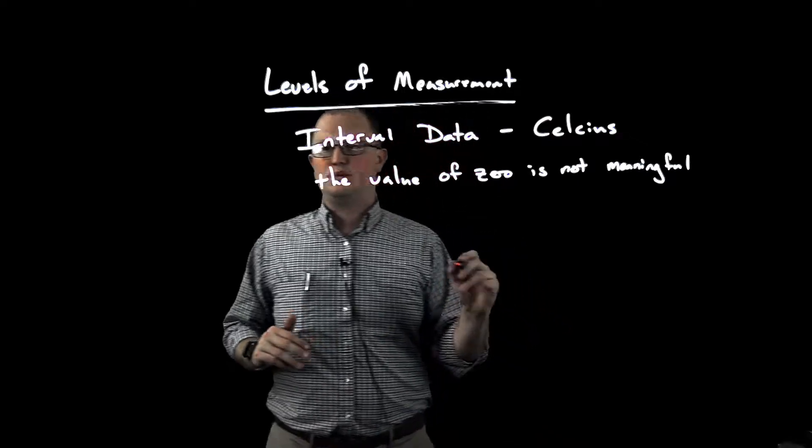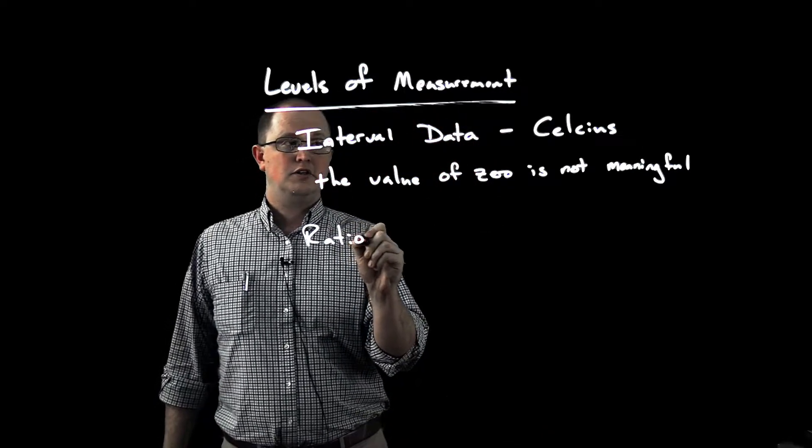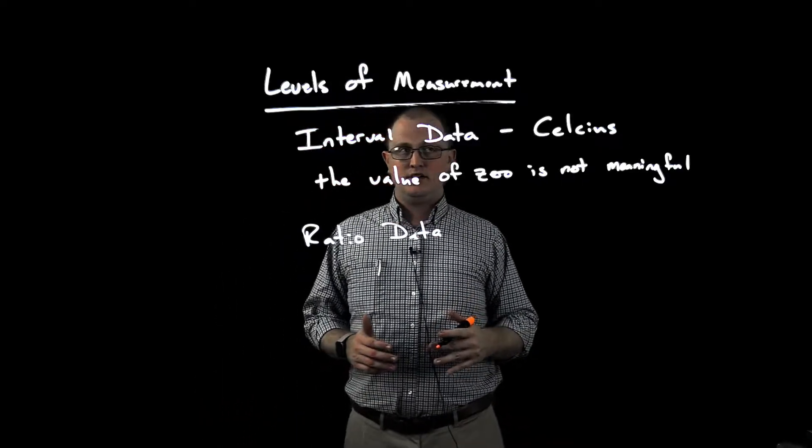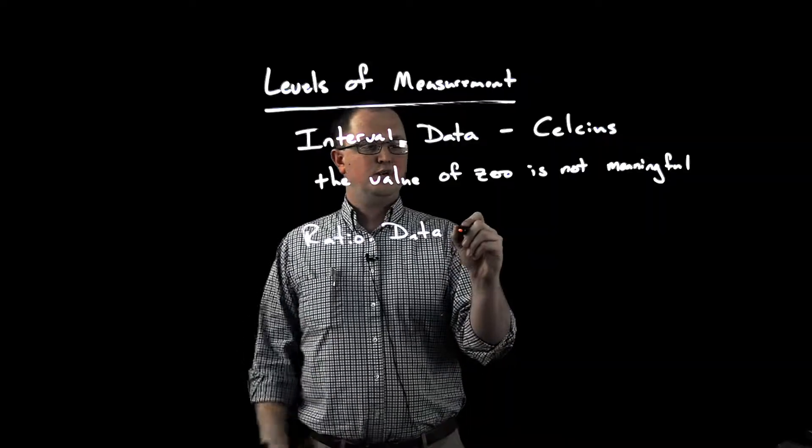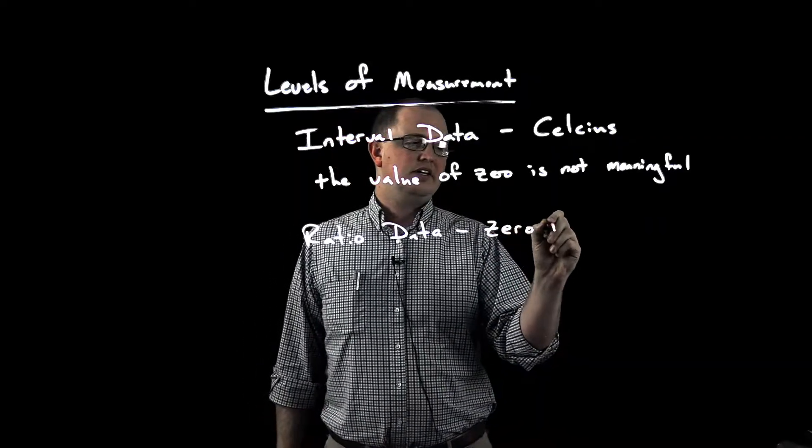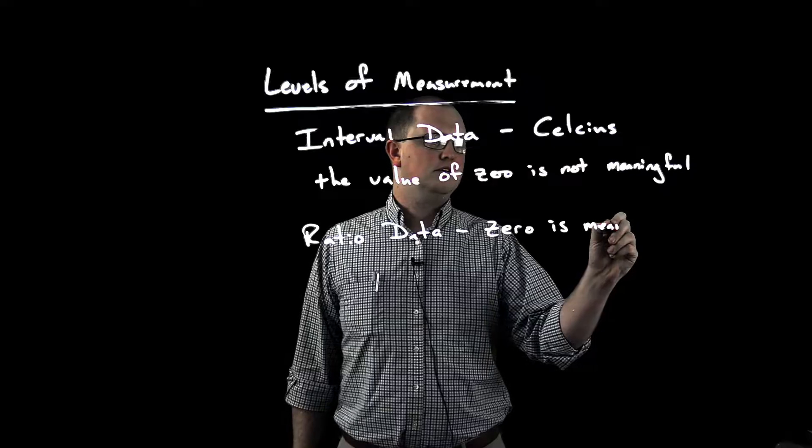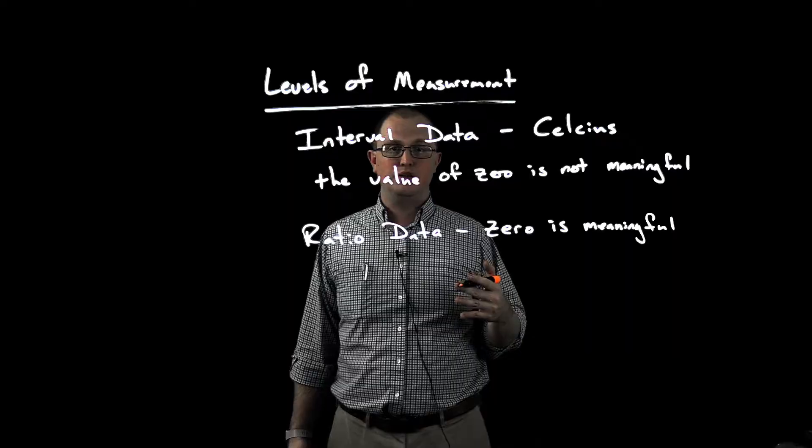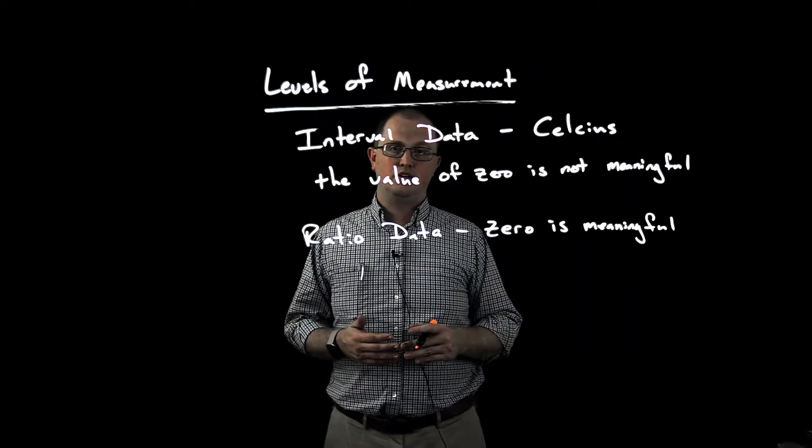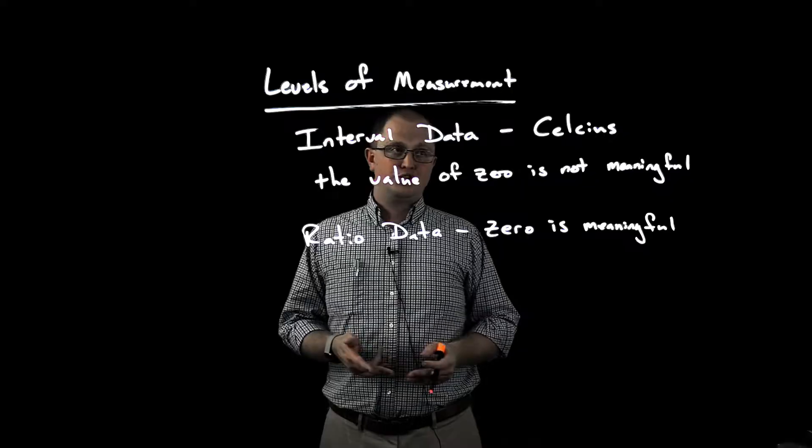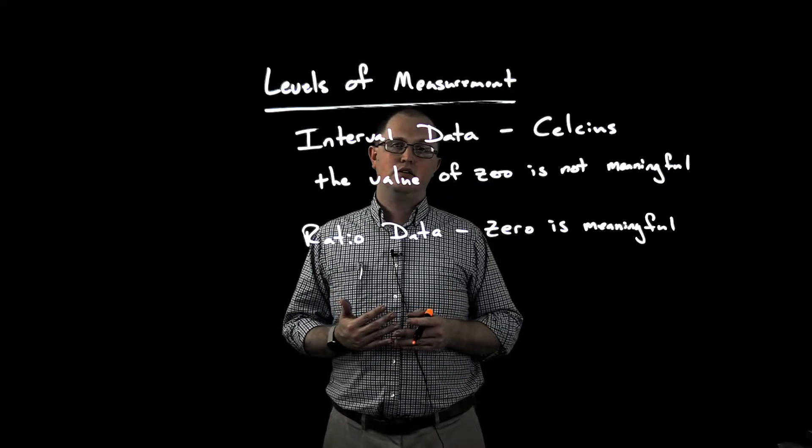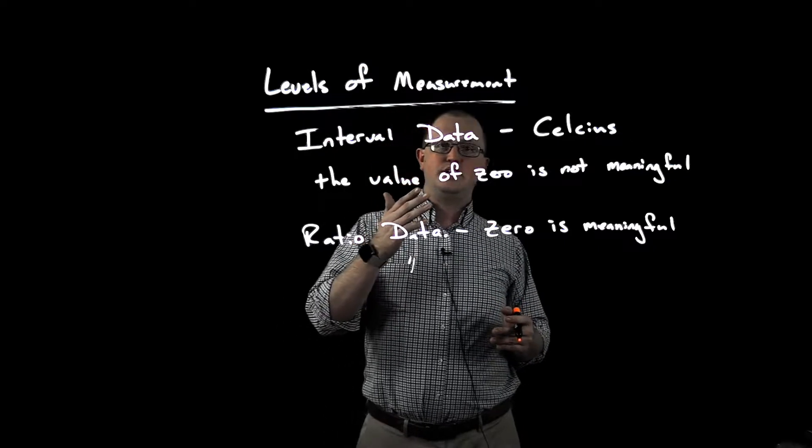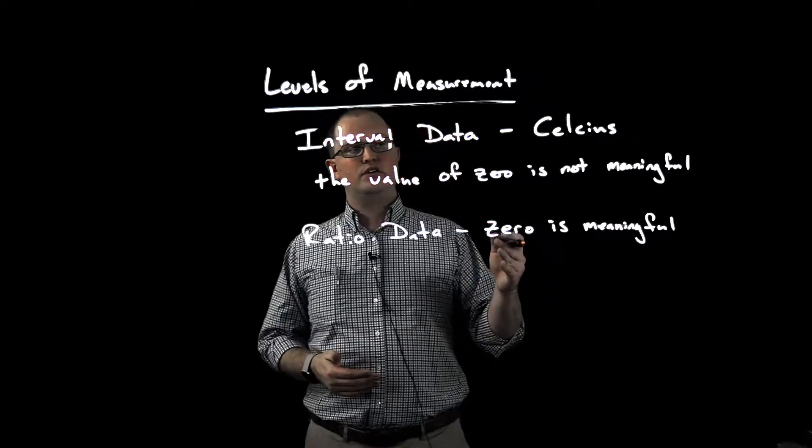So in contrast, we have ratio data. And this is again going to be numerical data. This is going to be a situation where zero is meaningful. This is going to be a situation that you're probably familiar with in any science class that you've taken. Length, measurement, time, weight, all of these things are situations where we can tell the difference between data and that zero is meaningful.